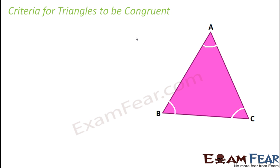Let us now quickly look at the criteria for triangles to be congruent. When we look at a triangle, it has many parameters to be compared. For example, a triangle has three vertices — like A, B, C are the three vertices — it has three angles: angle A, B, and C, and it has three sides.